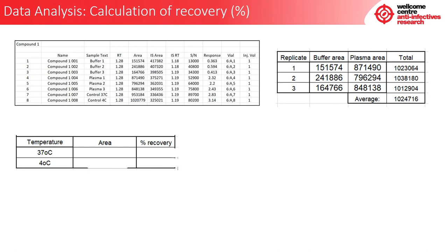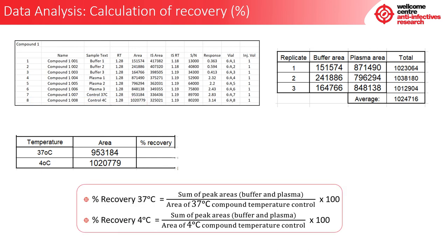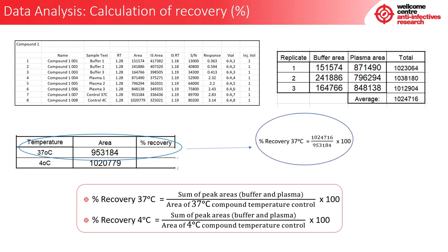Next, create a new table detailing the temperature control, area, and percent recovery. Enter the area for the 37-degree temperature control and the 4-degree temperature control. For the 37-degree temperature control, percent recovery at 37°C = (sum of peak areas — both buffer and plasma) / (area of the 37-degree compound temperature control) × 100. For example, percent recovery at 37°C = (average of the total buffer and plasma areas) / (area of the 37-degree temperature control) × 100, giving 108% recovery at 37 degrees.